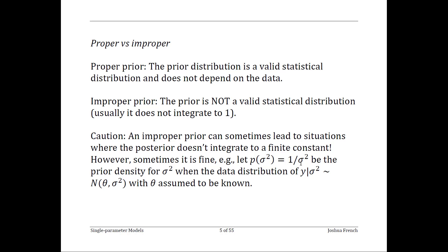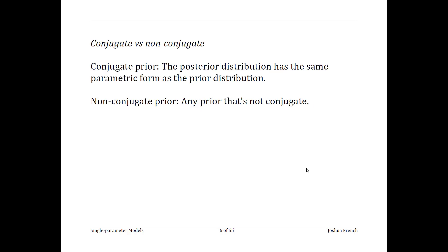The prior distribution doesn't integrate to 1, but the posterior distribution will be valid. Another way of dividing prior distributions is conjugate versus non-conjugate. Conjugate priors are perhaps the best known class of prior distributions.